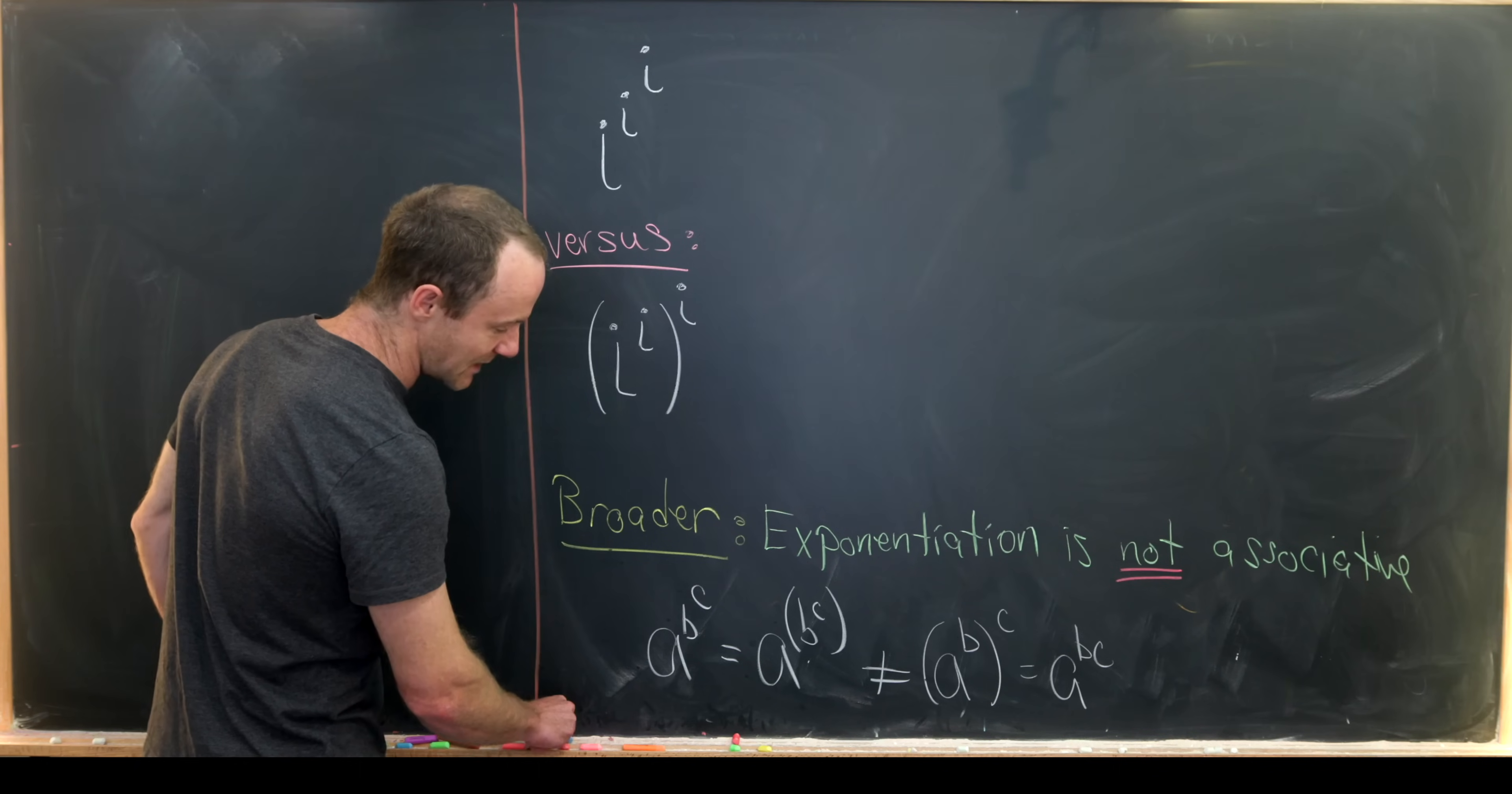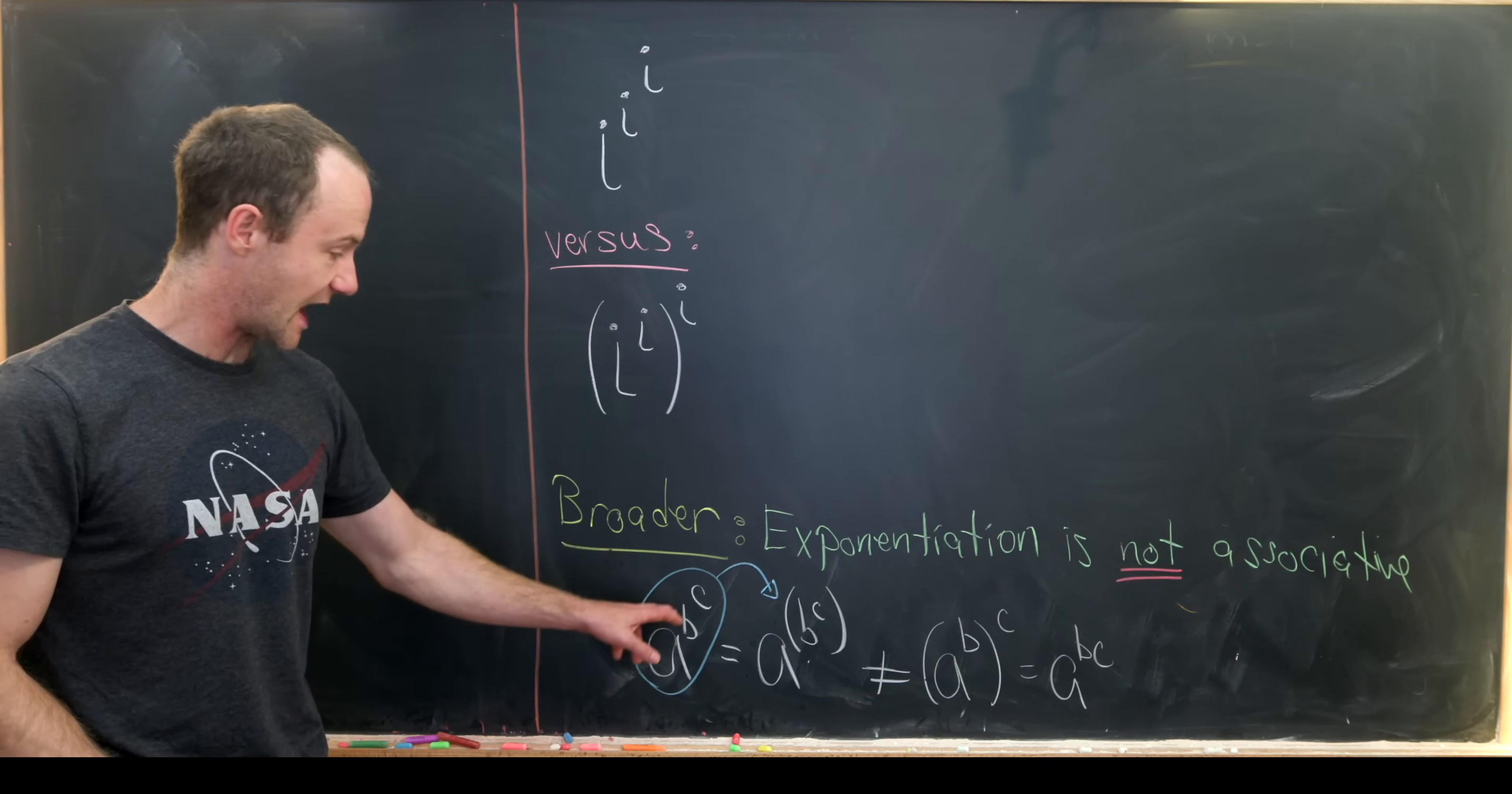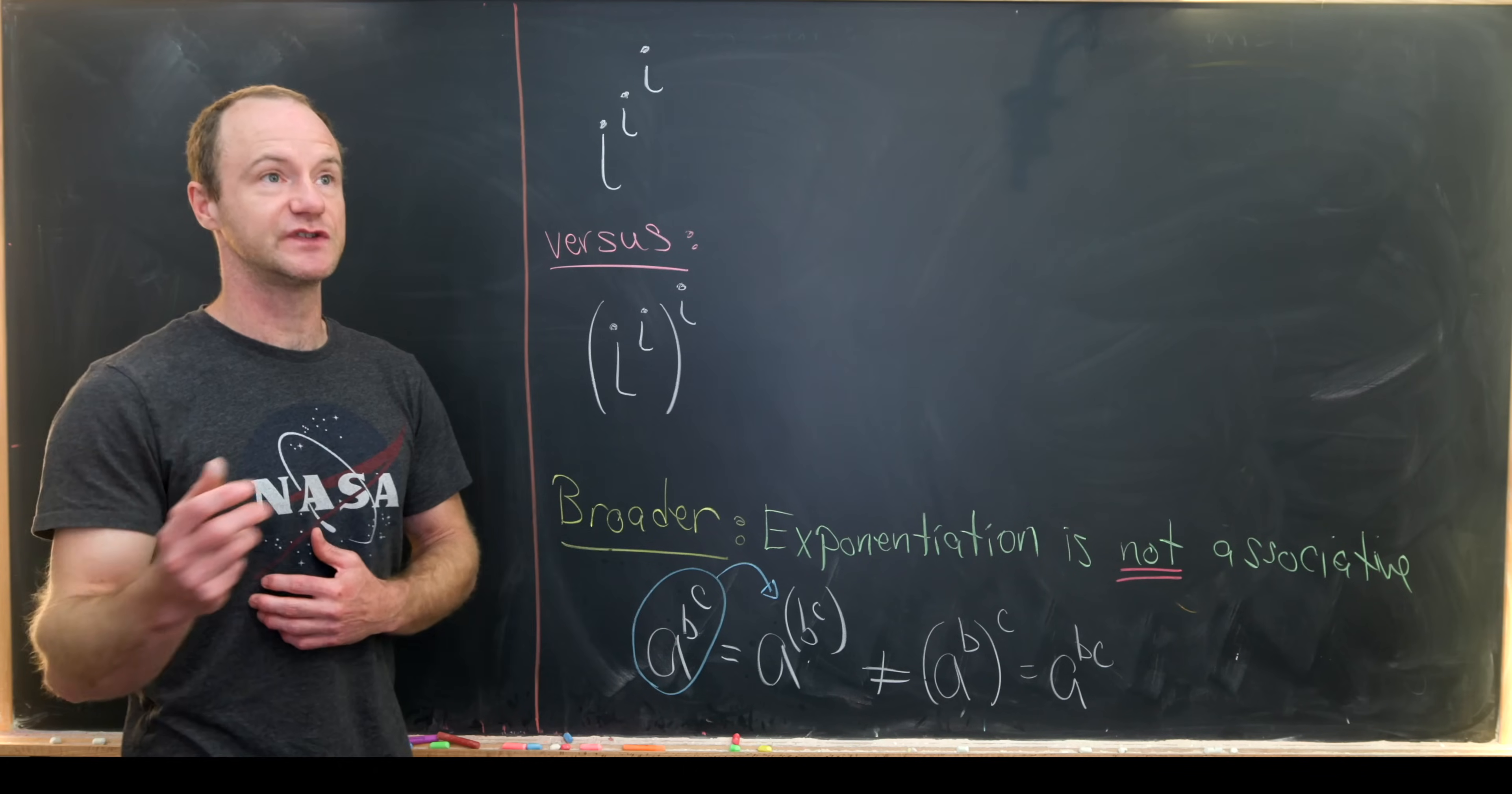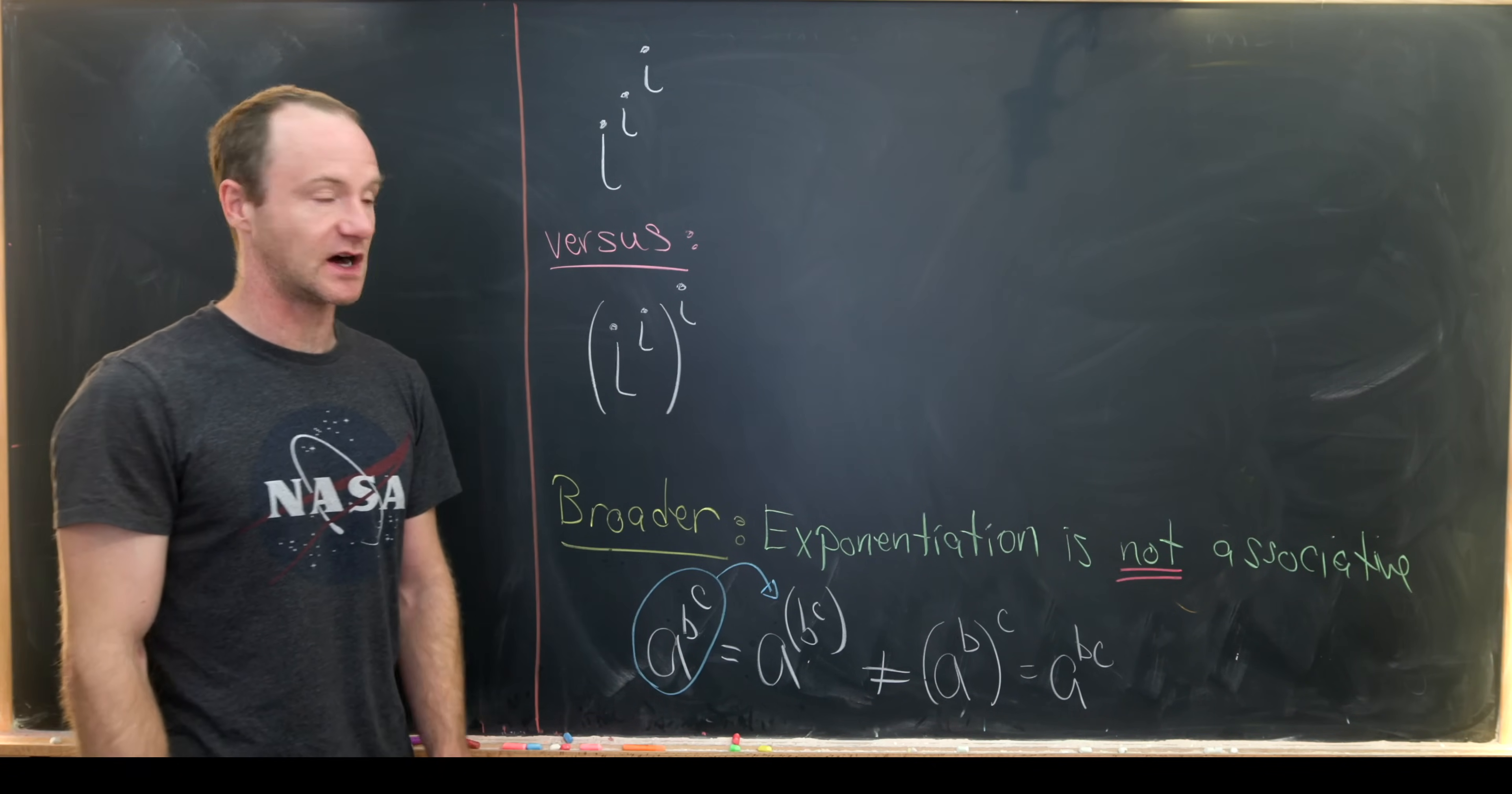But I guess maybe the real leap here is our choice as mathematicians to choose this association for our a to the b to the c, which really makes sense in the world of non-associative algebra in that you generally associate from the right to the left, which is what's done here instead of from the left to the right. So anyway, the big point of this video is that exponentiation is non-associative.